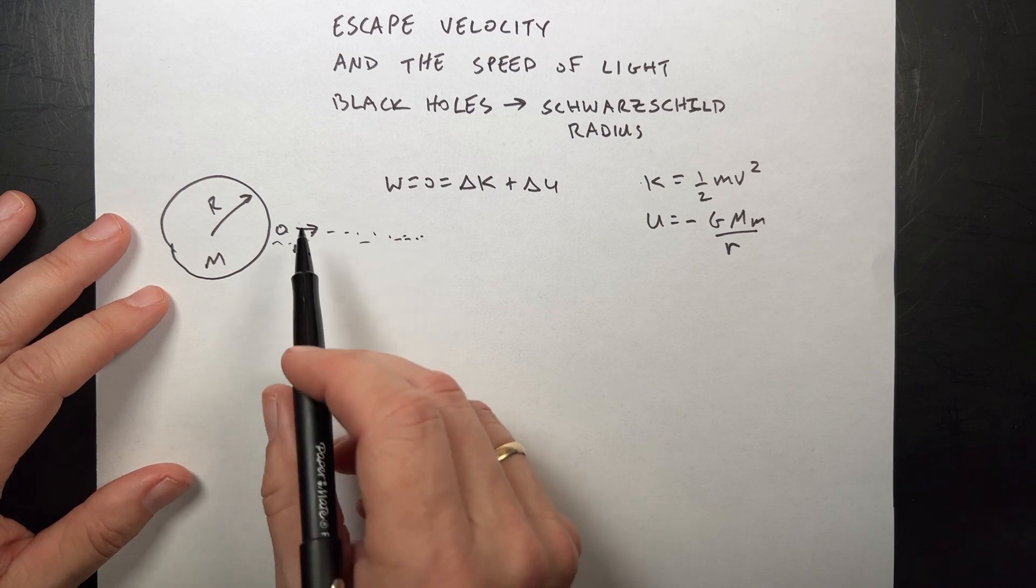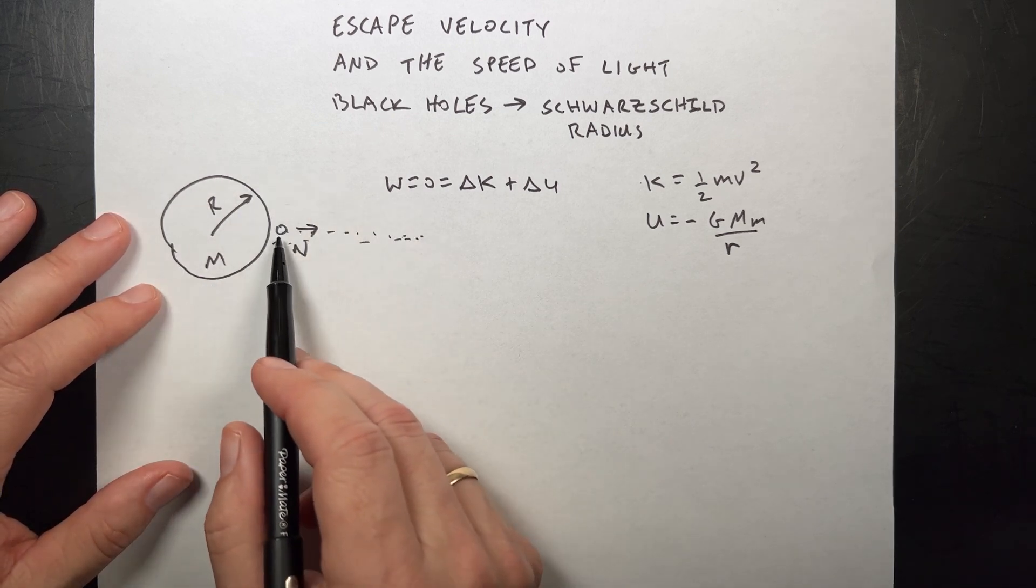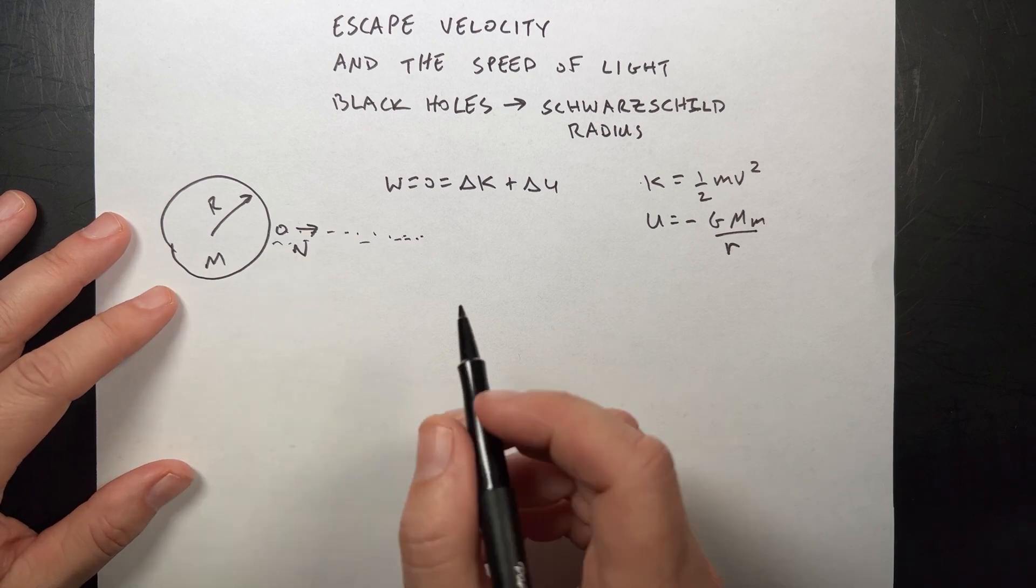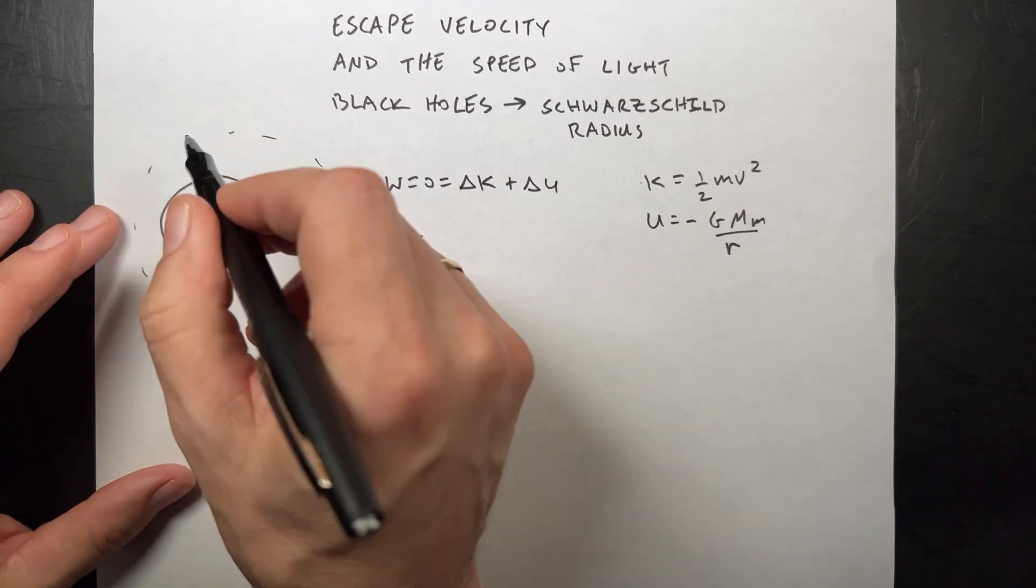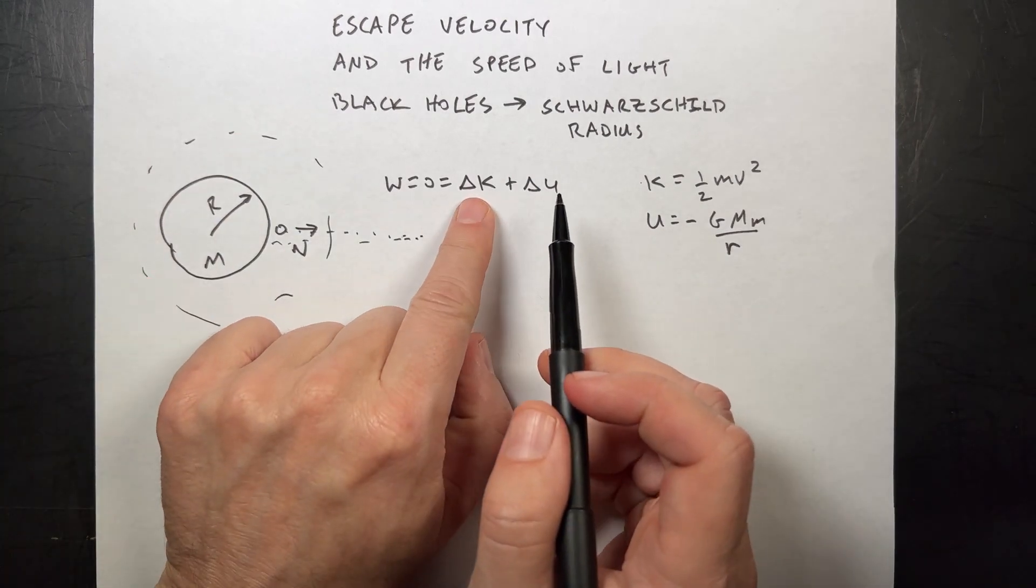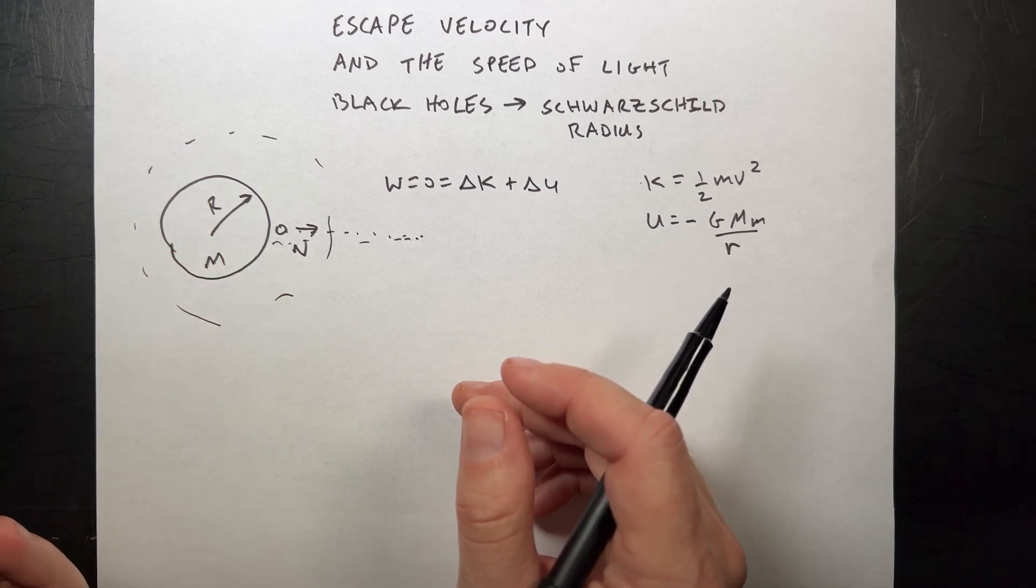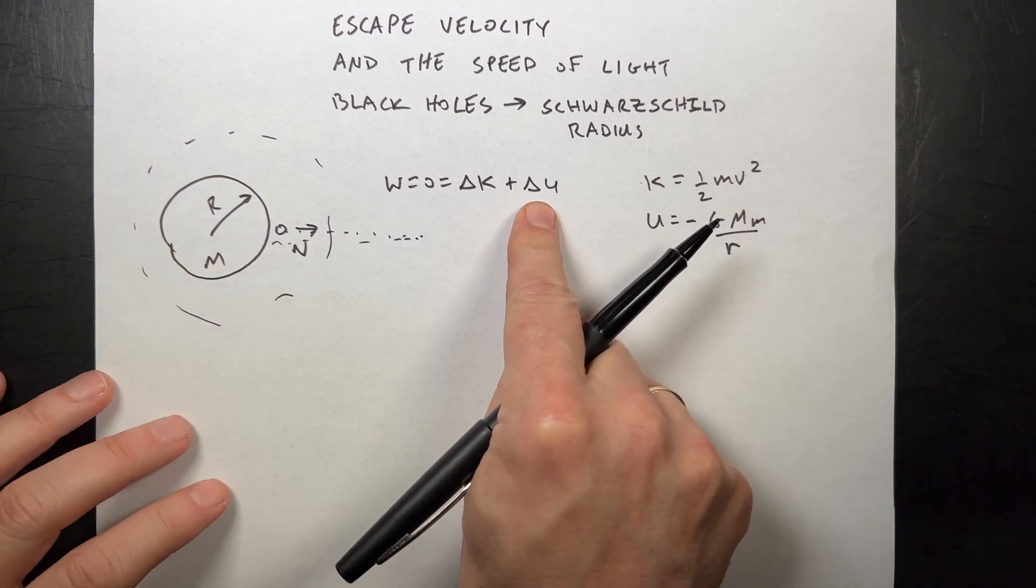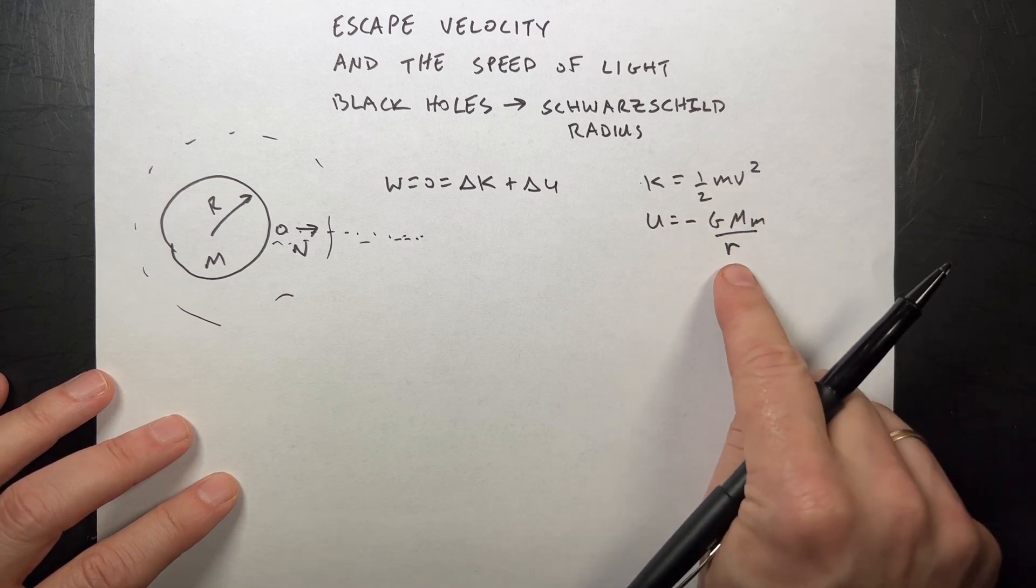Let's just say the system consisting of the planet, we're going to start with the Earth, and a mass is my system. Then there's no work done on that system. There's no external forces acting on that. So that would be a change in kinetic energy of the system, which is the Earth plus the mass, but the Earth doesn't really move, plus the change in gravitational potential energy.